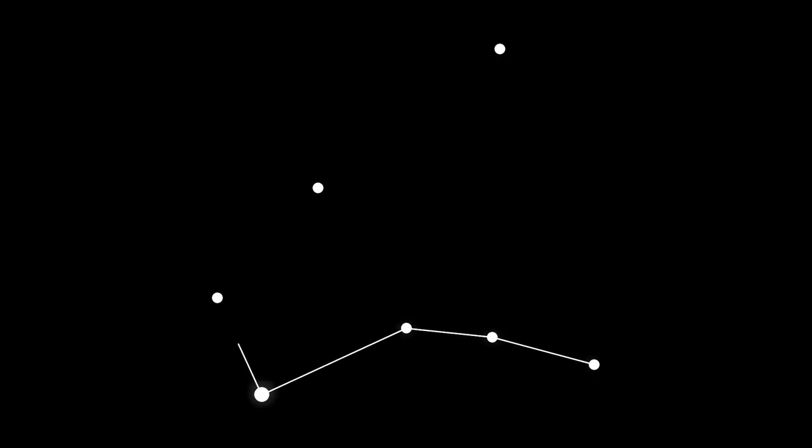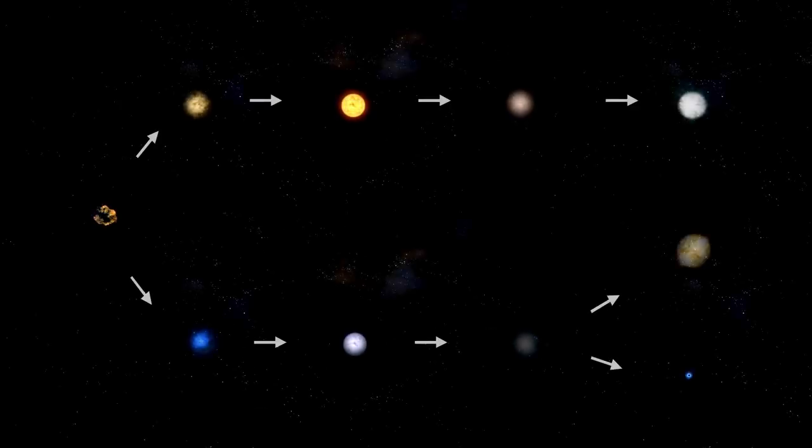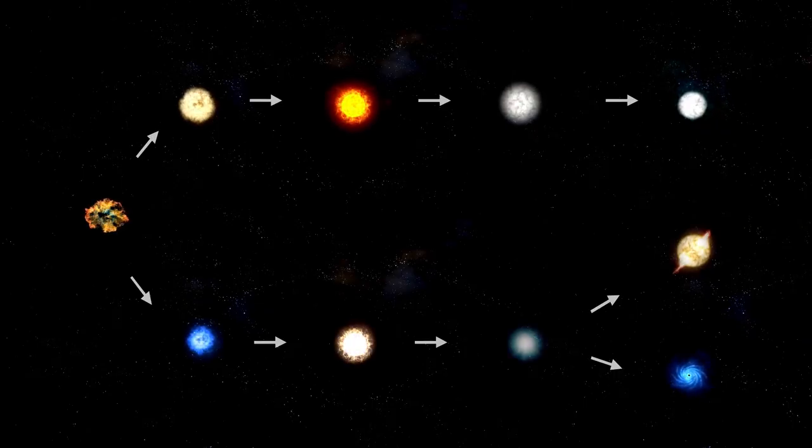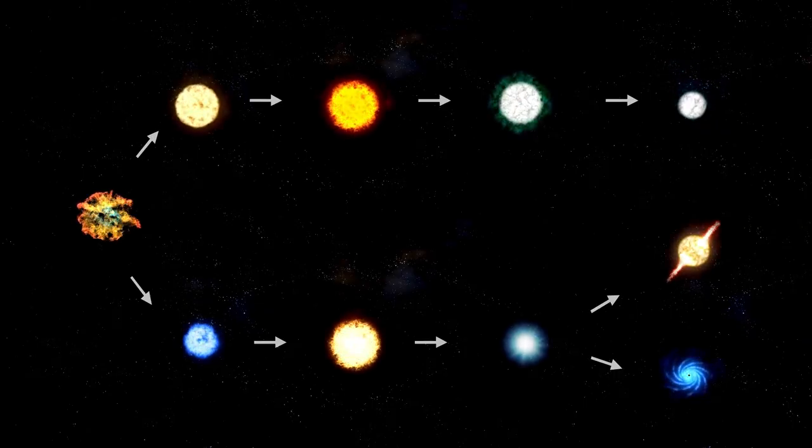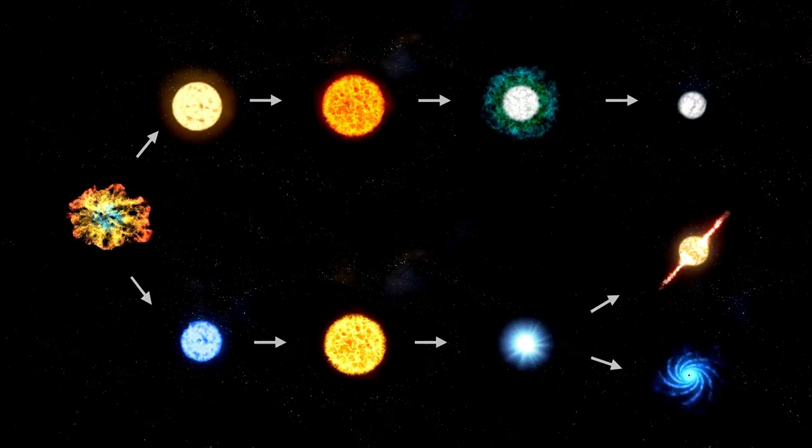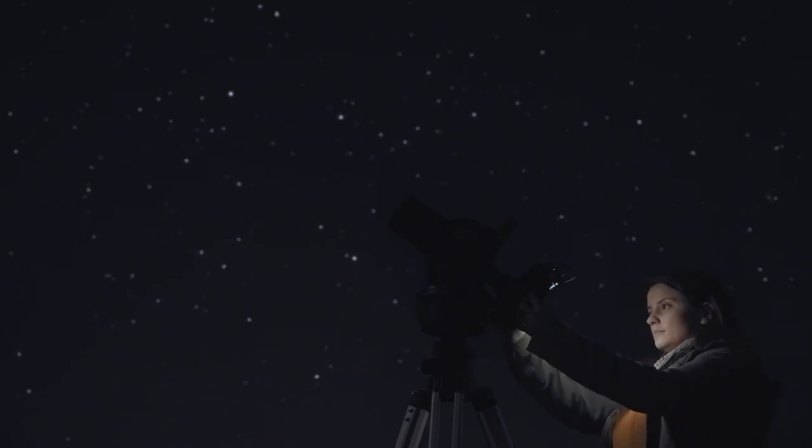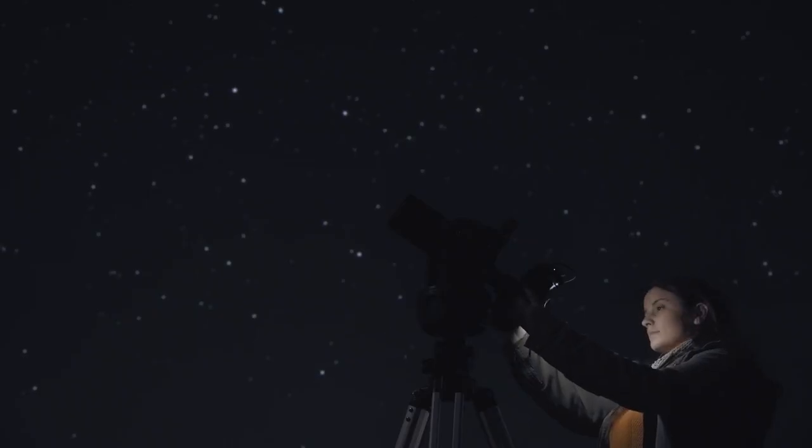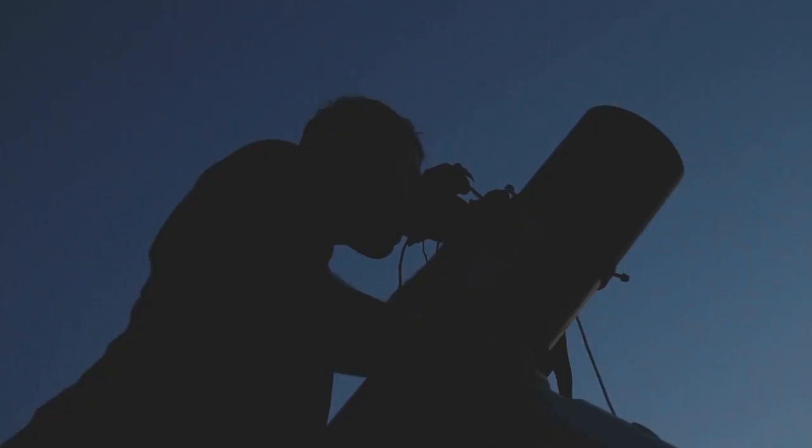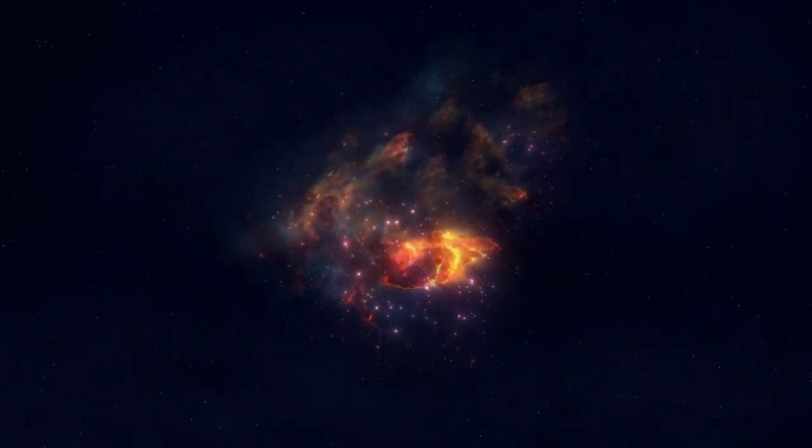Betelgeuse is what is known as a pulsating red supergiant, which means that it is an ancient, massive star that undergoes expansions and contractions. During these cycles, its brightness can vary in the night sky, becoming more intense or dimmer. These brightness changes can occur over extended periods, ranging from tens to hundreds of days.